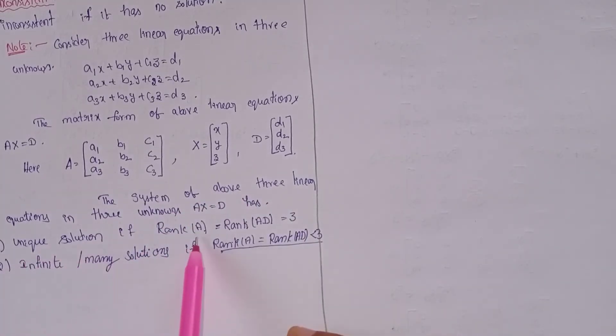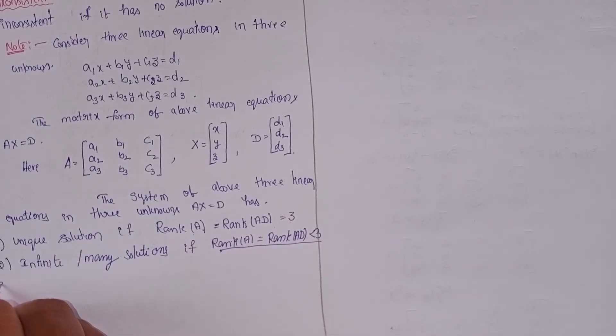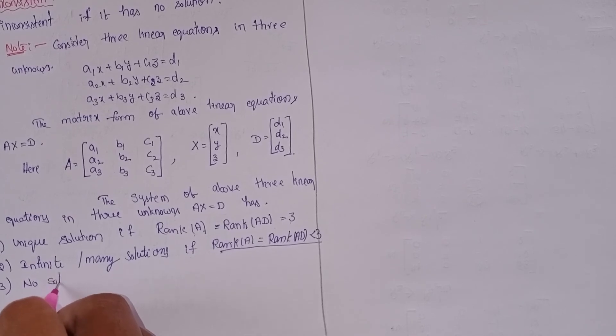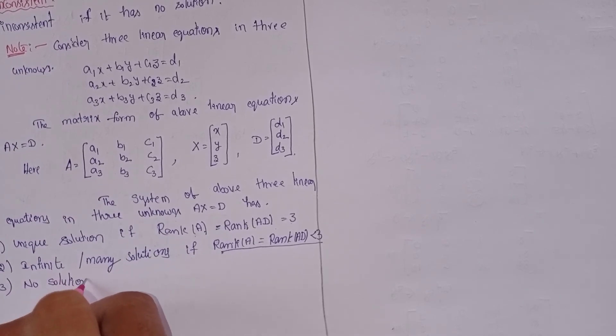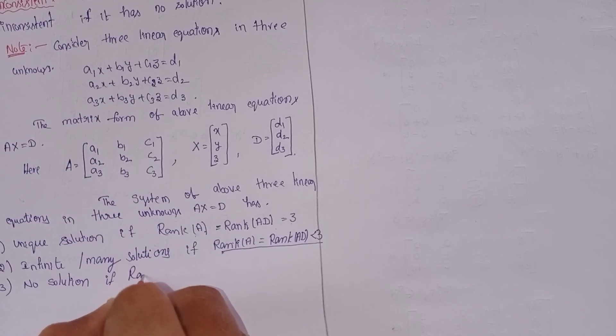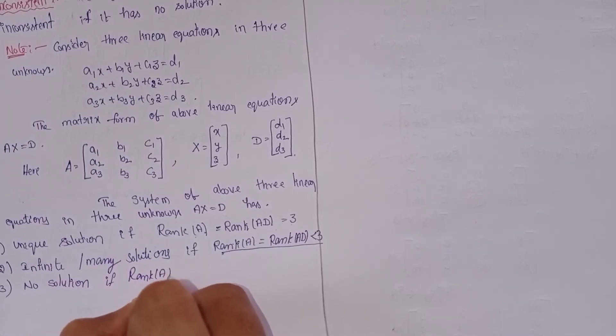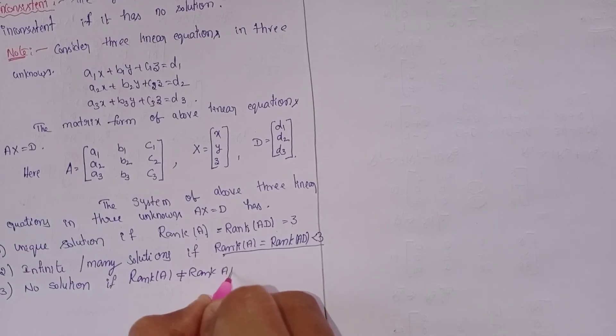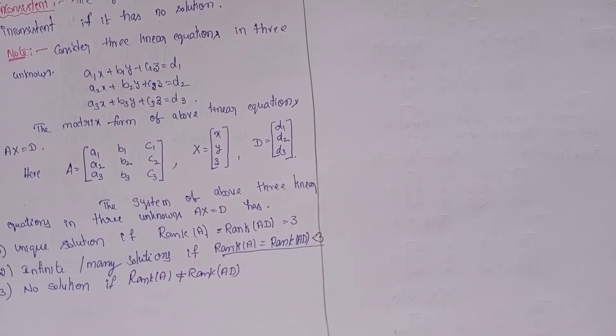If the solutions are unique, the rank A equal to rank (A, D) that is three. Now next, third point: no solution if rank A is not equal to rank (A, D).